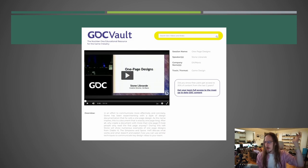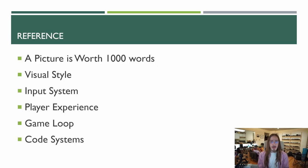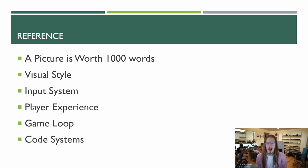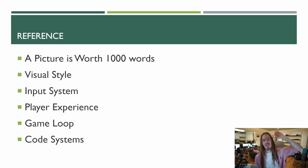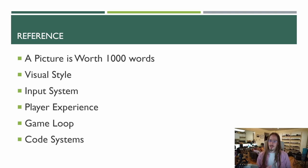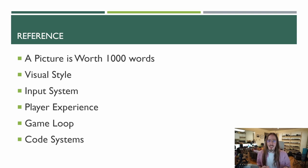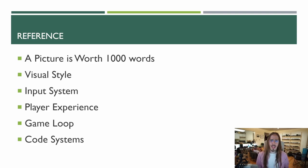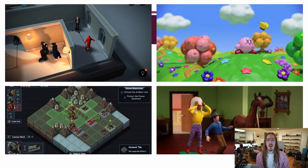Reference imagery — you need reference imagery. Even if you're making a game that is only audio, then you need reference audio and reference music. You need reference not just for the visual style but also for things like what the player's input system looks like, what the player's experience is like, what the game loop looks like, what the code systems and AI behaviors are. You can kind of mash it up into your original idea.